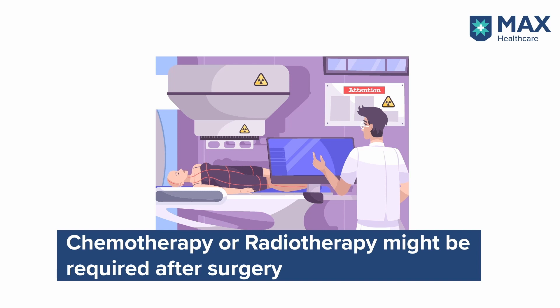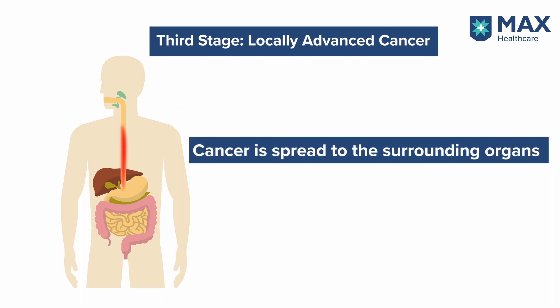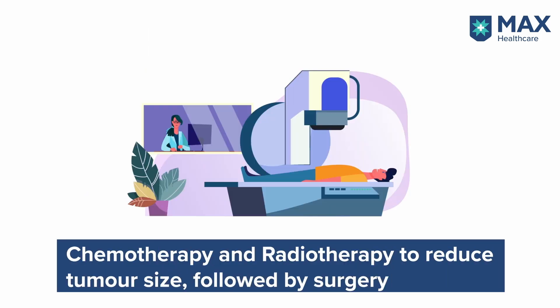The next stage of esophageal cancer is locally advanced cancer, meaning the cancer has spread to surrounding organs including the tissues near the esophagus and the lymph nodes. Such patients are firstly given chemotherapy and radiotherapy to reduce the size of the tumour, and then the patient undergoes surgery.